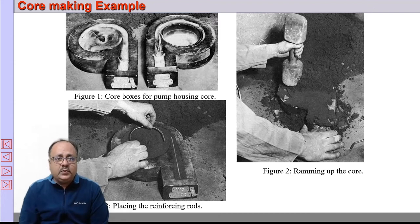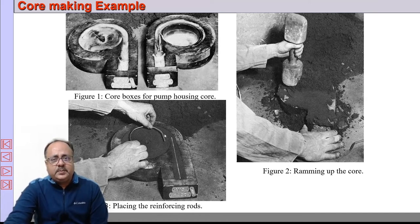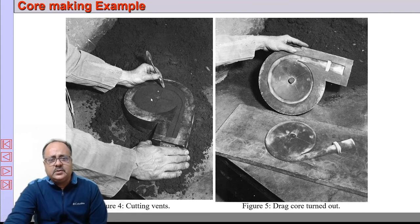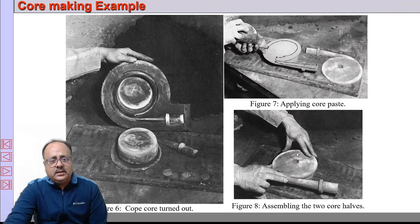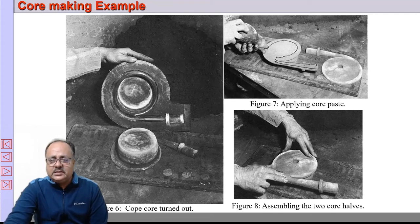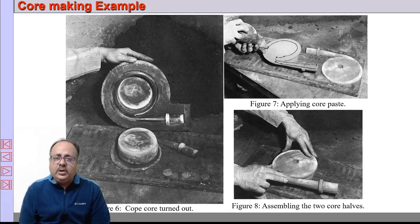With a practical example: this is a core box with cope half and drag half. Core sand — not molding sand — is placed and rammed. Reinforcements such as steel wire are inserted to provide more strength. Vents are cut so gases can escape. Then each half is removed from the core box. Core paste adhesive is added, and the two pieces are joined properly and brought to size. This is how a core is made, and it will later be inserted into a mold.